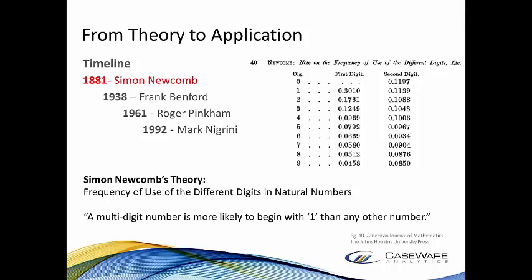Going from theory to application, where did Benford's law start? In the early 1880s, an astronomer noticed that the pages in the front of his logarithmic tables were more worn than the pages in the back of the book. The tables were used to multiply and divide large numbers. This individual was named Simon, and he published his paper on his observations in 1881, but did not offer any proof nor any practical use of this observation, so the article was probably forgotten.